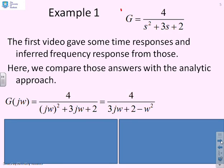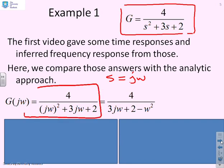Here's an example. We have a transfer function G = 4/(s² + 3s + 2). We want to find the gain and phase using the analytic approach and compare that with the answers from video one, where we inferred gain and phase from time responses. First, substitute s = jω into G(s), giving 4/((jω)² + 3jω + 2). Combining real and imaginary parts, we simplify to this form.